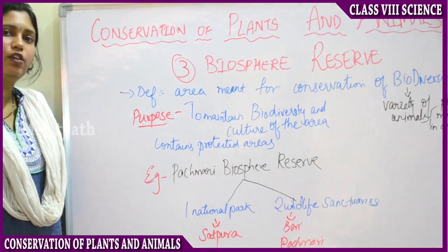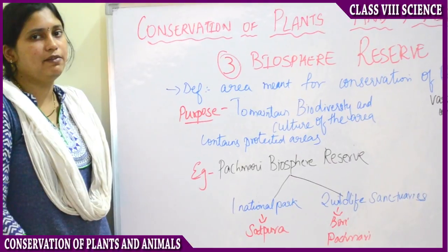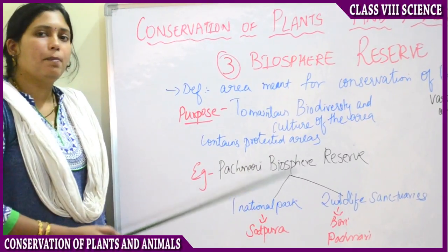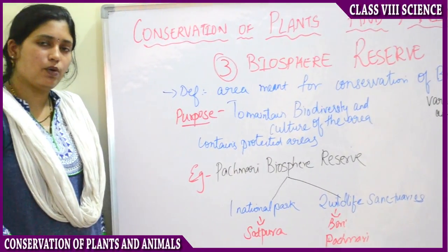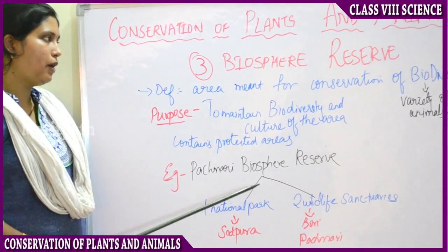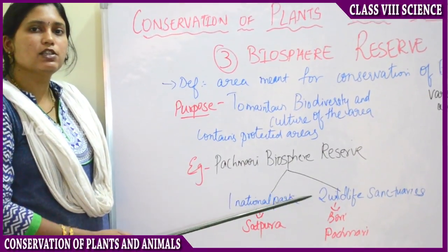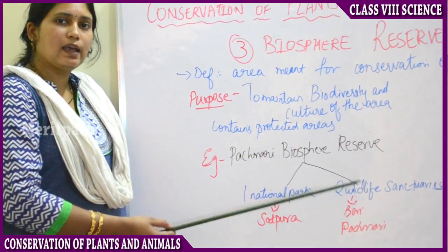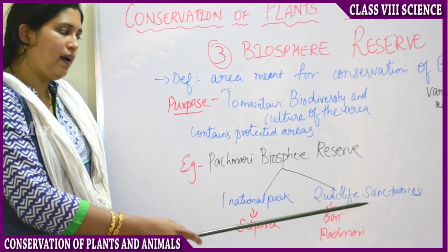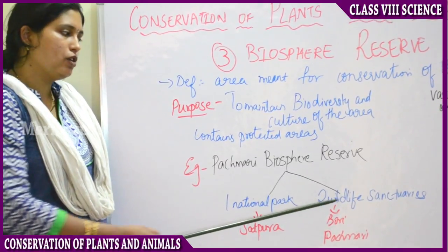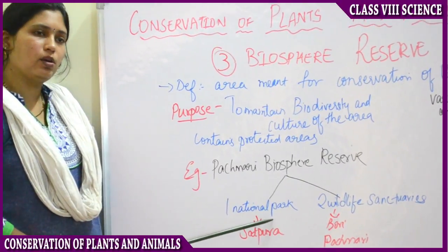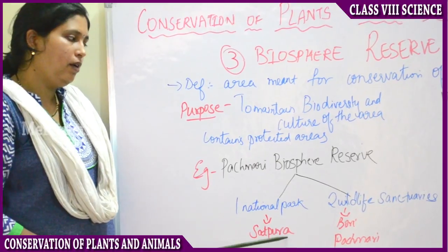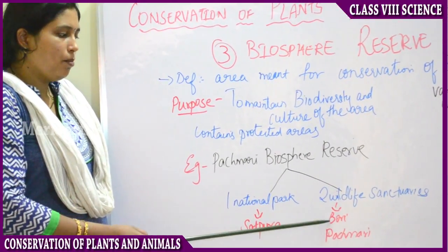Biodiversity is the variety of plants, animals, and microorganisms living in that area. Biosphere Reserves are protected areas meant for the living of plants, animals, and microorganisms. An example of a Biosphere Reserve is the Pachmari Biosphere Reserve, located in Madhya Pradesh. It contains one National Park — Satpura National Park — and two Wildlife Sanctuaries named Bori and Pachmari.